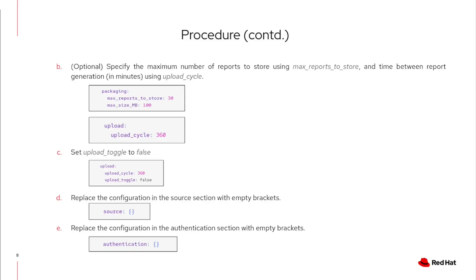Ensure you download the generated reports from the PVC before they are lost. To configure the operator to perform in a restricted network, set the upload toggle to false. Replace the configuration in the source section with empty brackets, and replace the configuration in the authentication section with empty brackets.